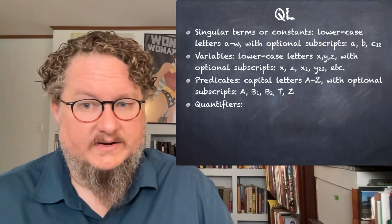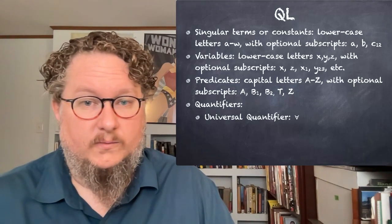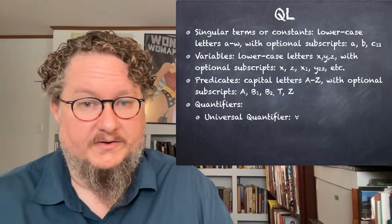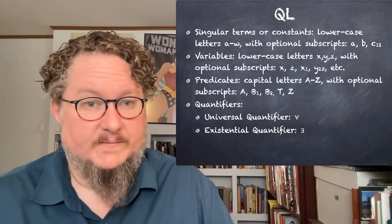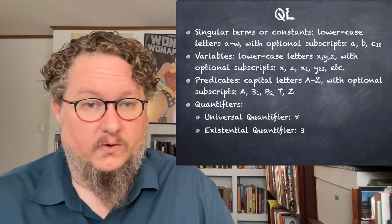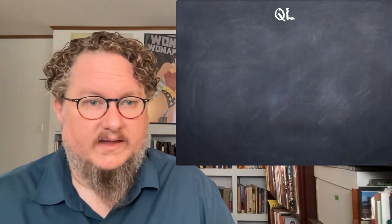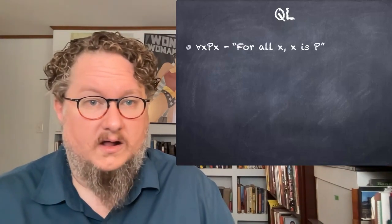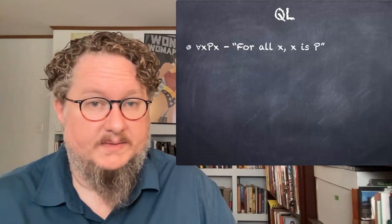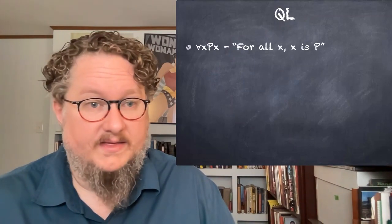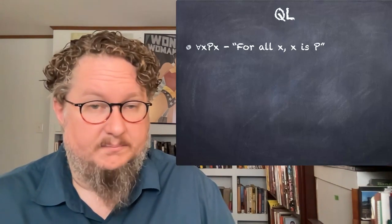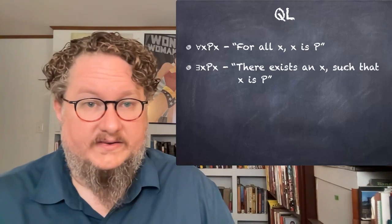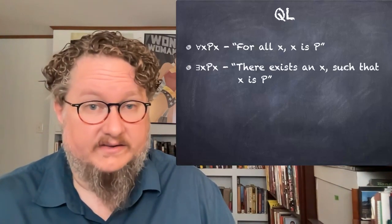Then we have the quantifiers. We have two in QL: one is the universal quantifier, which we represent with an upside-down A, and it means 'for all.' And the existential quantifier, which we represent with a backwards E, which stands for 'there exists.' So for all X, PX means that for all X, X is P — for everything we're quantifying over, P is true of it. There exists an X, PX means there exists an X such that X is P.